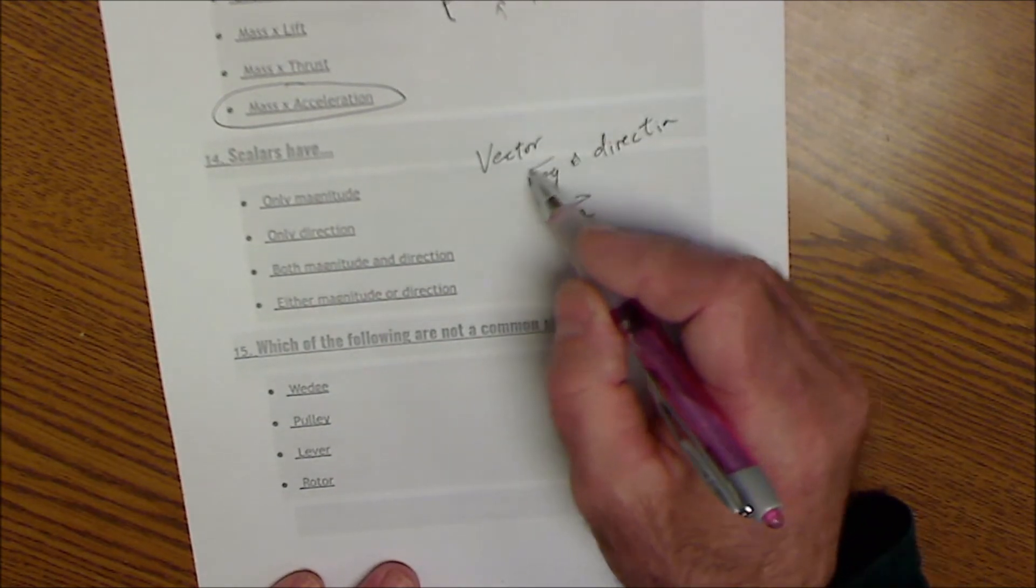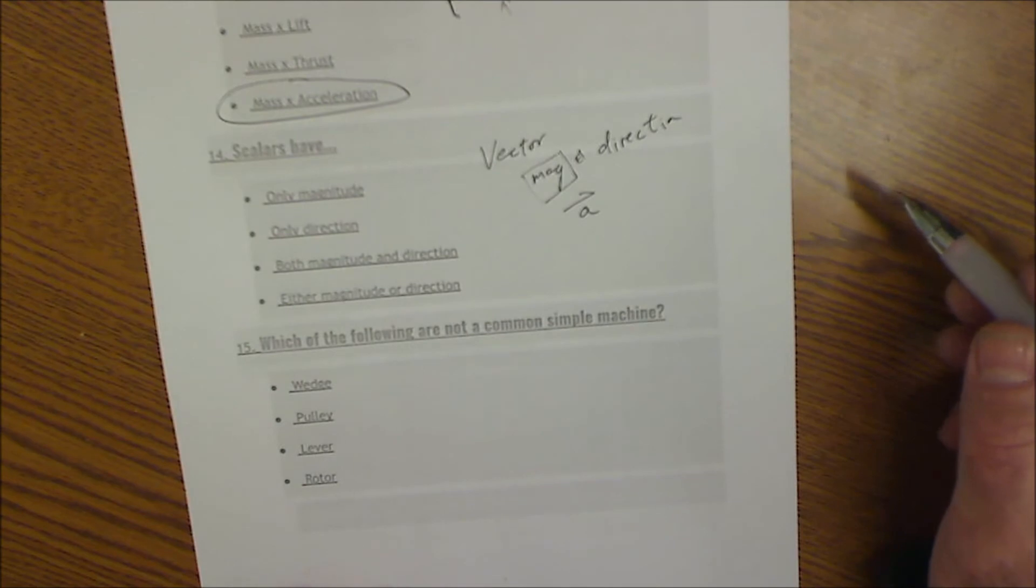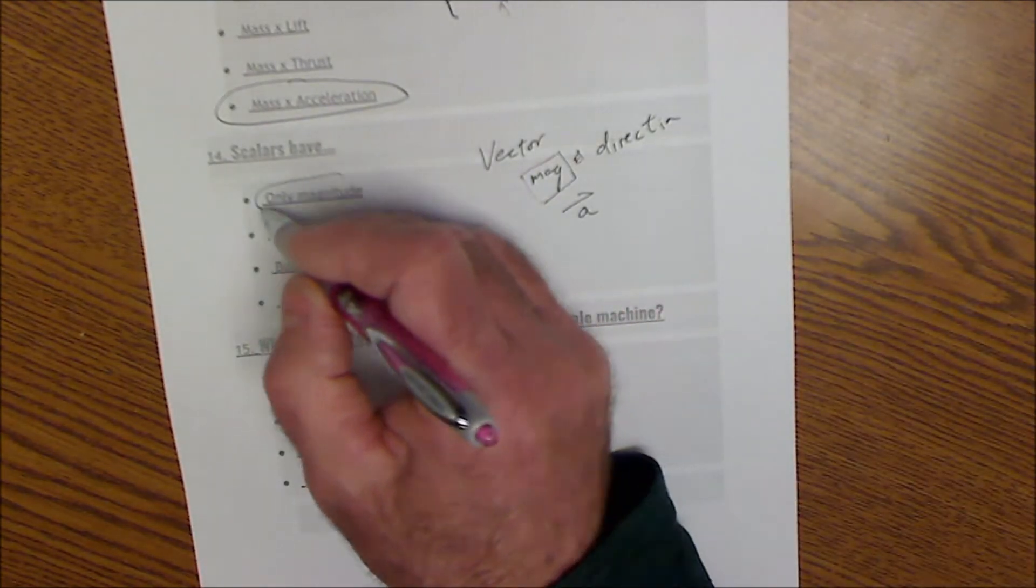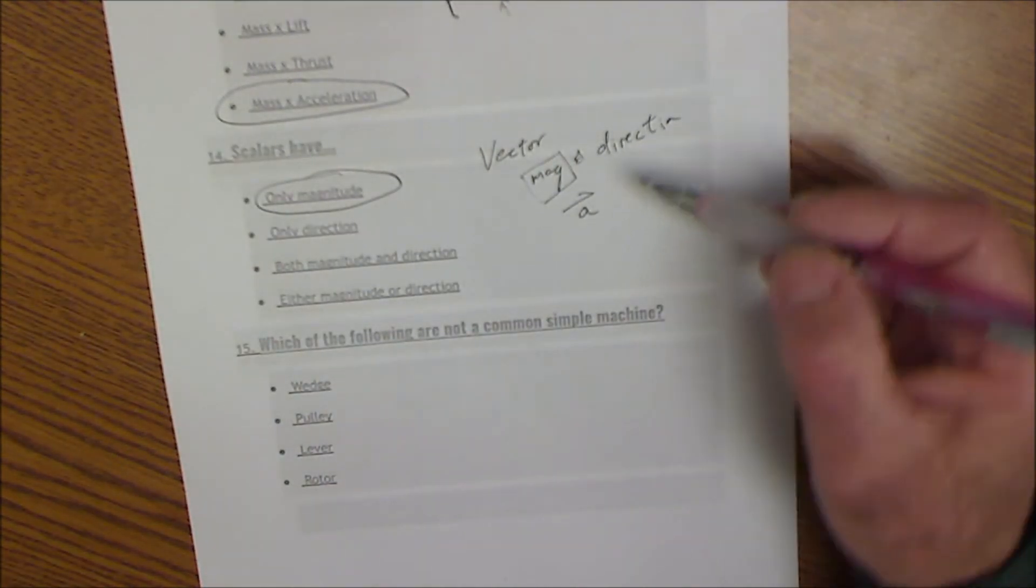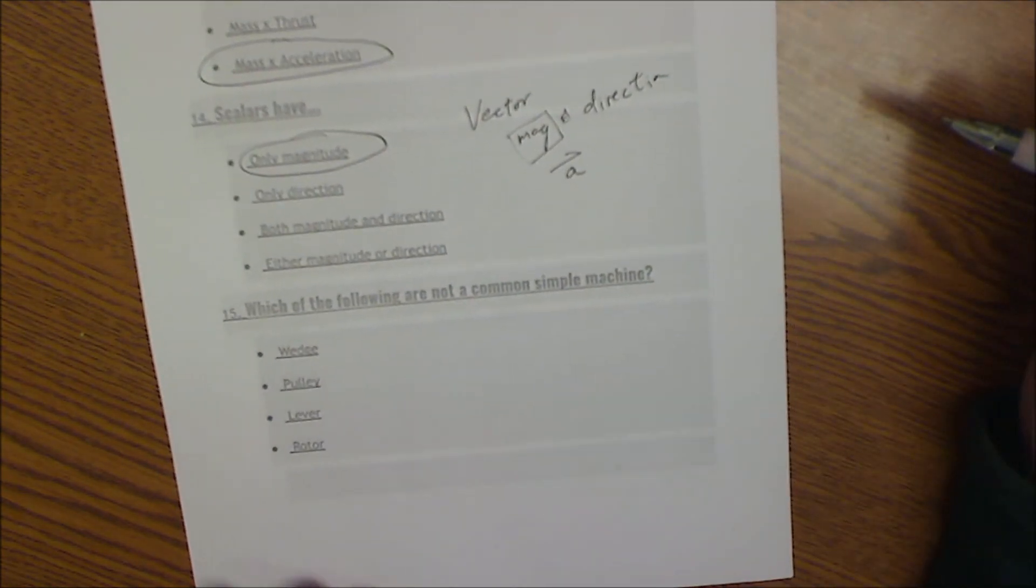If it only has magnitude, that's a reference to a scalar. So a scalar means that there's only magnitude. Only, say, a miles per hour without a direction. So without a velocity.